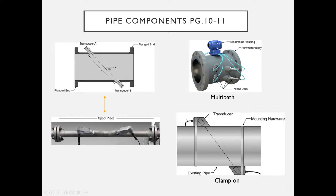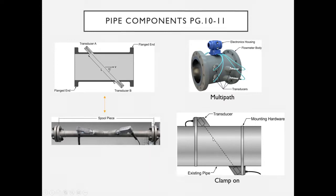The clamp-on ultrasonic meter is another installation style. These come in portable cases and can be clamped onto any acoustically transmittable pipe to verify flow of other meters in the field. They are a very handy tool for diagnostics, identifying pluggages, and verifying flows without interrupting the process.